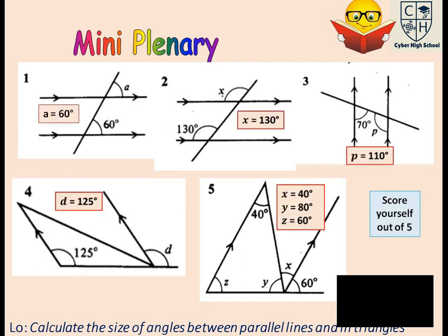For self-assessment: a is 60 degrees because it is a corresponding angle. x is equal to 130 because it is also corresponding. For the third scenario, we have 70 degrees and need to find p. Since alternate angles give us 70 degrees on the other parallel line, we then apply angles on a straight line: 180 minus 70, which gives p equal to 110 degrees.